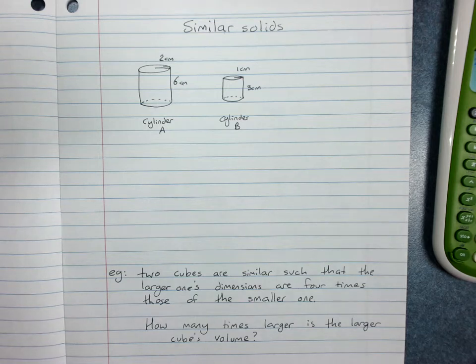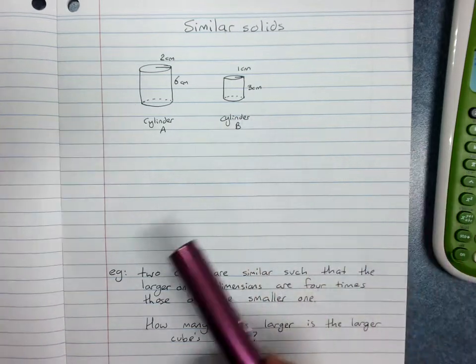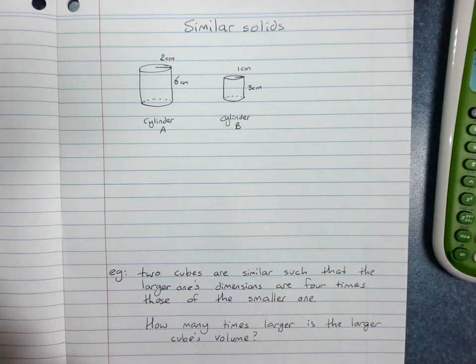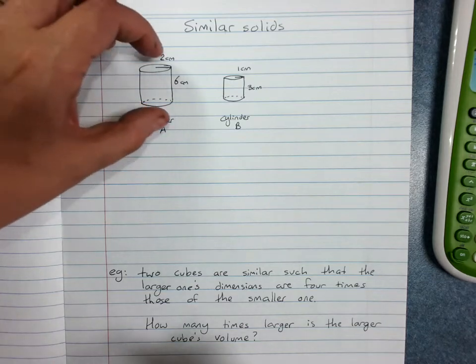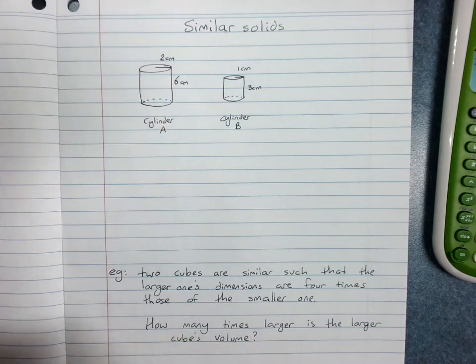Similar solids. Two solids are similar if they have the same shape. For example, these are cylinders, and the ratios of their corresponding dimensions are equal.